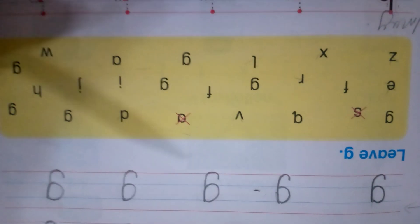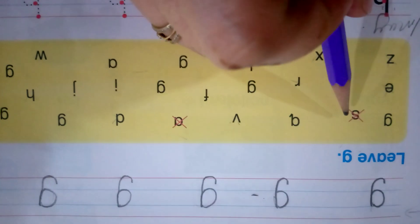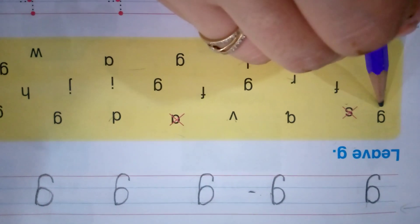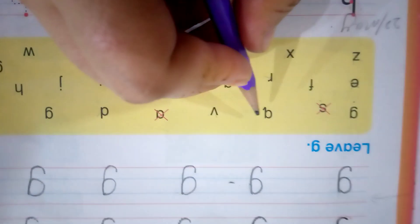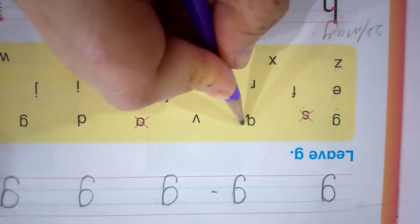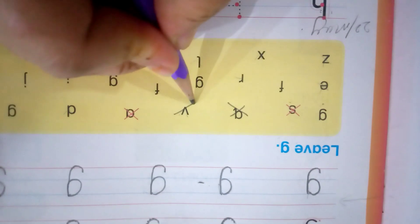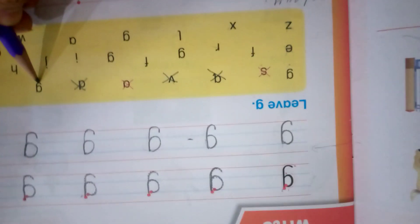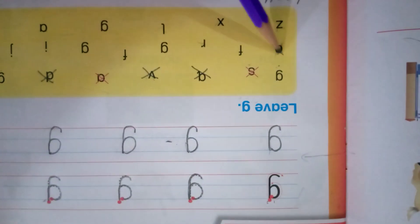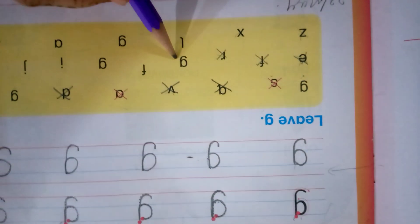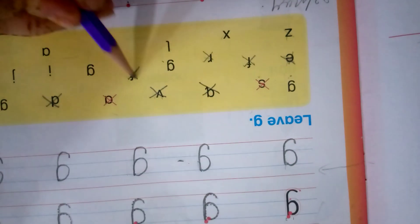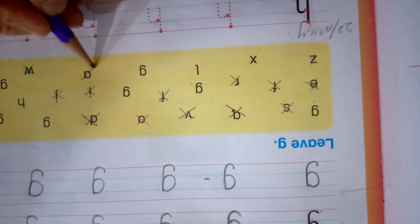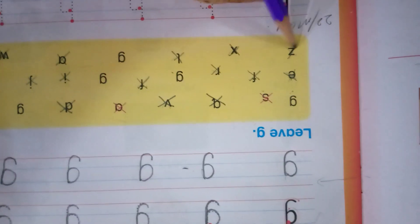Now look at this yellow block. Leave G — put a cross on other letters and only leave the letter G. Put a cross with me. This is Q — cross. V, D — cross. G — we are not going to put a cross. E, F, R — cross. Left letter G. F, I, J, W, A, L, X and Z — cross.